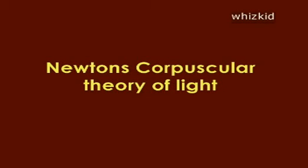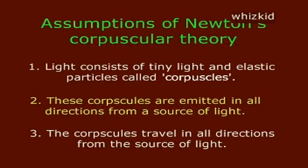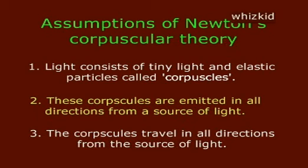Newton's Corpuscular Theory of Light is based on explaining all the observed properties of light. One of its key assumptions is that light consists of tiny, light, and elastic particles called corpuscles. These corpuscles are emitted in all directions from a source of light and travel outward from that source in all directions.